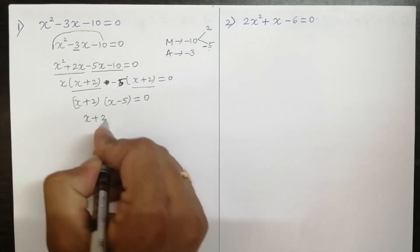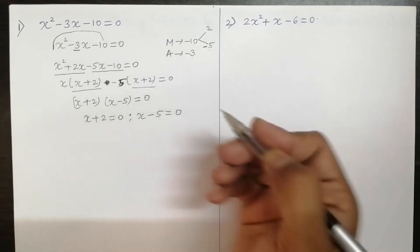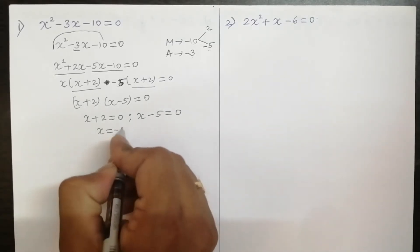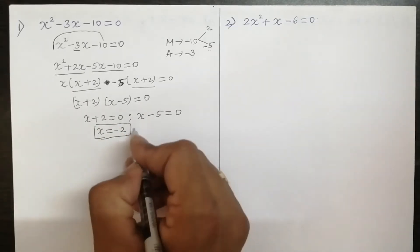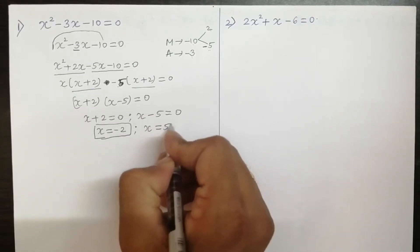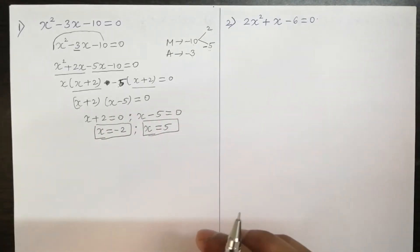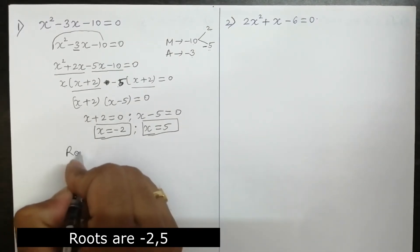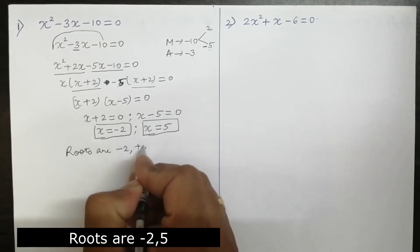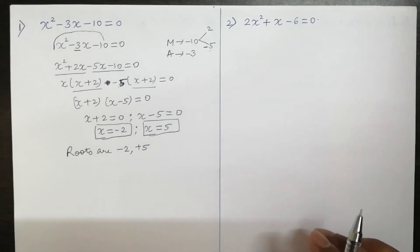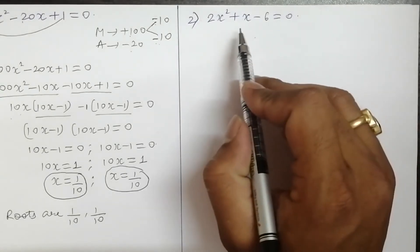Since both brackets are equal to zero, we equate each independently: x + 2 = 0 and x - 5 = 0. From the first: x = -2 (shifting +2 to RHS). From the second: x = 5. So the roots of this quadratic equation are -2 and +5.